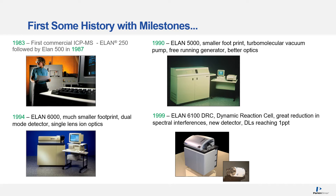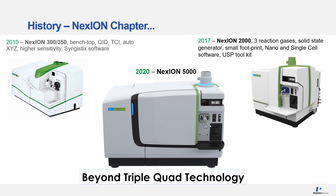The DRC was truly a breakthrough in the reduction of spectral interferences and lowering detection limits. A new chapter of Perkin Elmer ICP-MS instruments was launched in 2010 with the introduction of the Nexian 300 — a benchtop unit with a quadrupole ion deflector, triple cone interface, an auto XYZ stage, and new Syngistics software. These design changes led to much higher sensitivity and lower background. In 2017, the Nexian 2000 was released, boasting an extremely small footprint, a new solid-state RF generator, and a new load-coil design. The Nexian 1000 was released a year later.